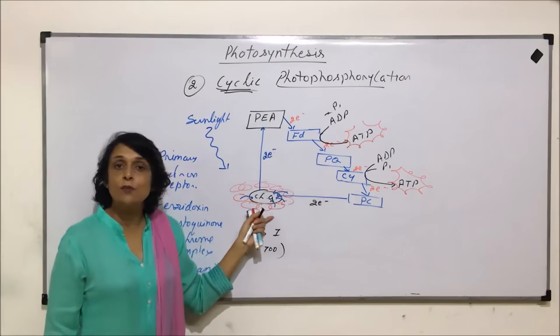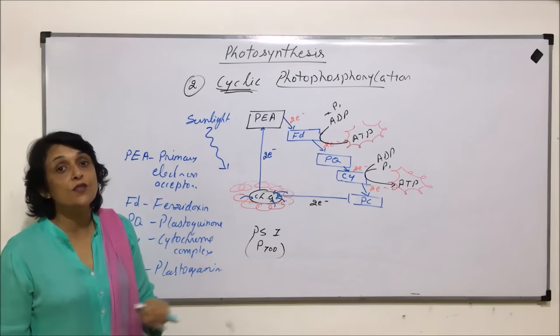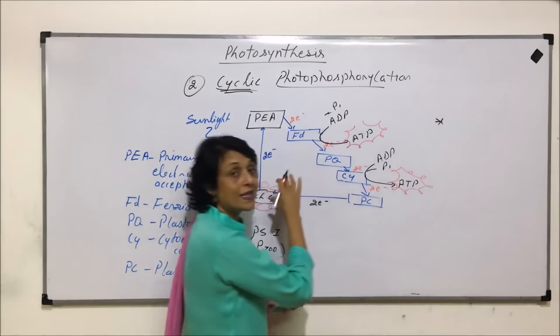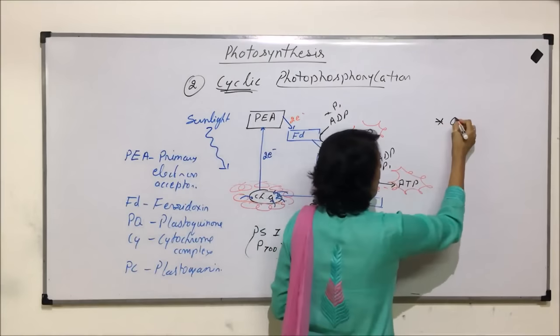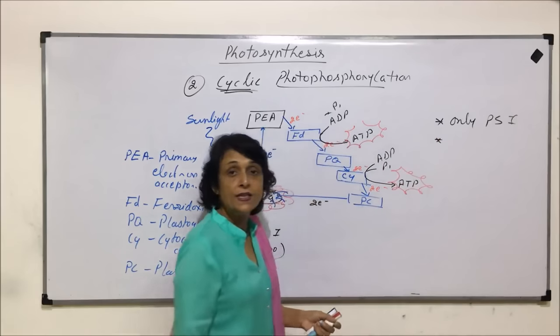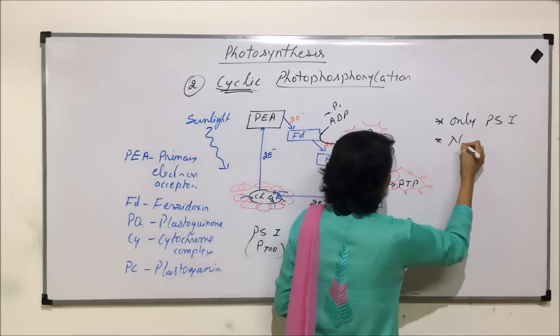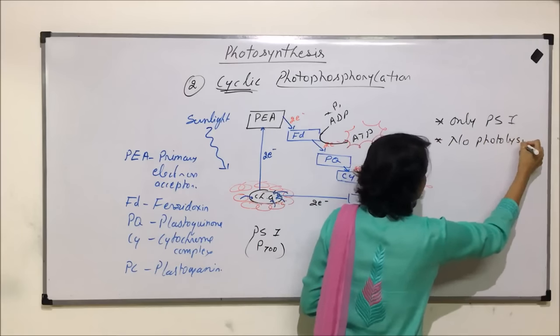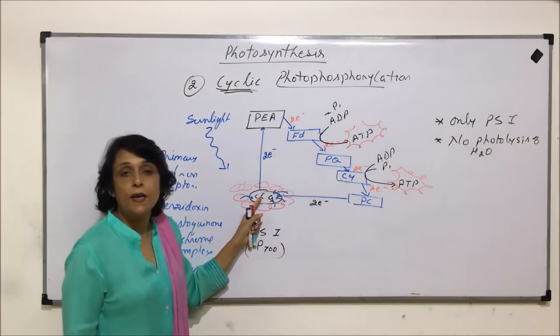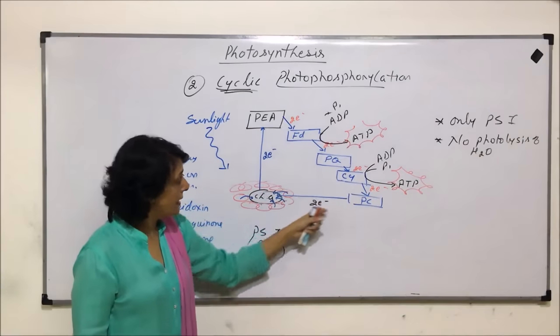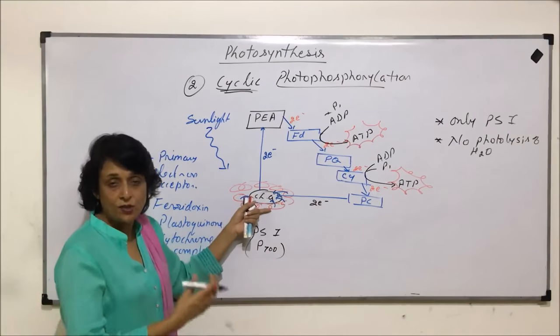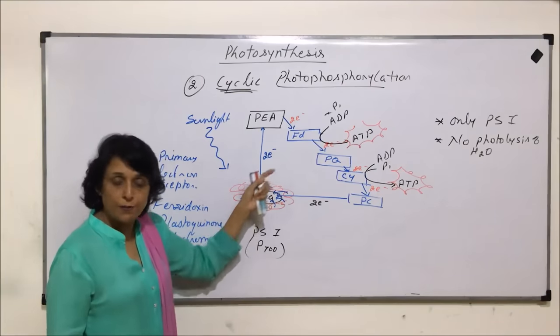As the electron pair comes back here, photolysis of water is not required. So, important thing, in case of cyclic photophosphorylation, it is only PS1 which is involved. Number two, important thing is, there is no photolysis, no photolysis of water. The reason is, the electron is getting released from chlorophyll A, and the same pair is coming back to chlorophyll A. So, we don't have to replace or give that lost electron, because it is coming back.